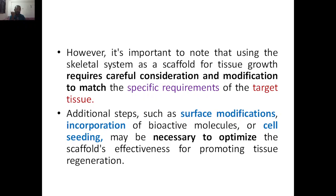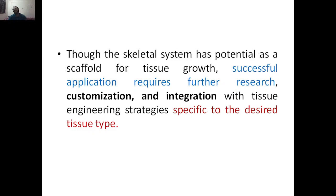In order to restore the structural and functional properties of bone, though the skeletal system has potential as a scaffold for tissue growth, successful application requires further research, customization, and integration with tissue engineering strategies specific to the desired tissue type. The specific properties required by the patient have to be delivered, and integrating the skeletal system with tissue engineering strategies is also very important to get the specific desired tissue type.